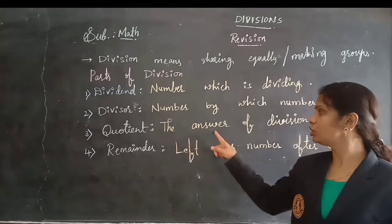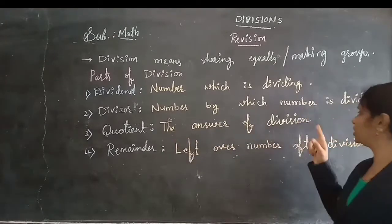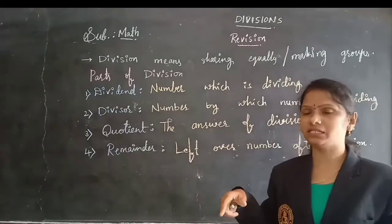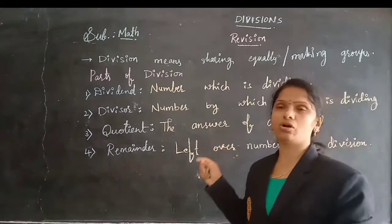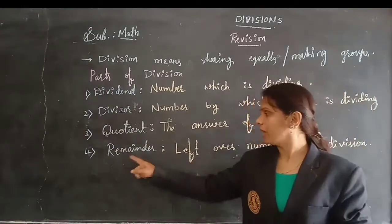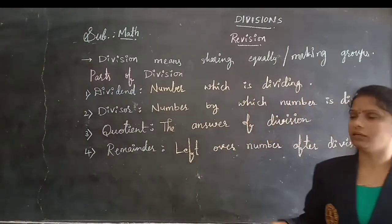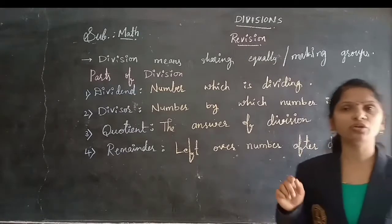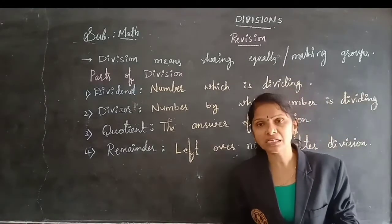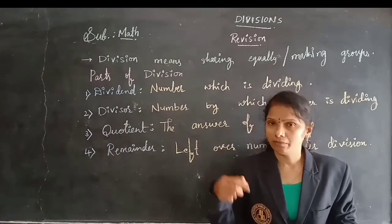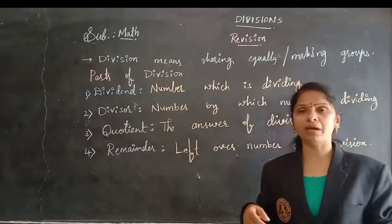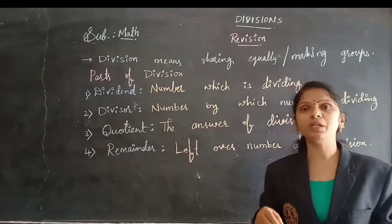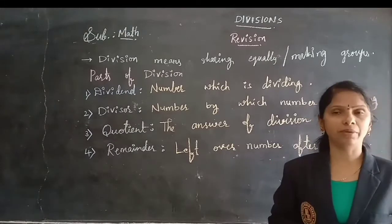And quotient — the answer of the division. Whatever answer we get after doing the division is called the quotient number. And remainder — the leftover number after division. At last, something that is left over which is indivisible — that number is called the remainder.